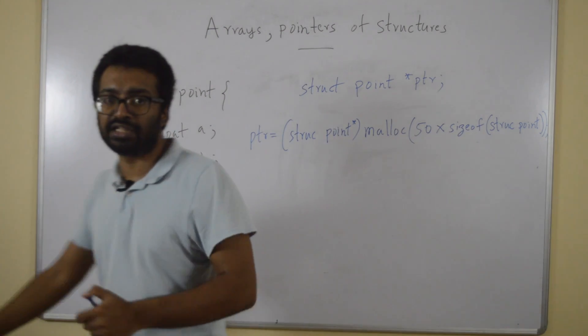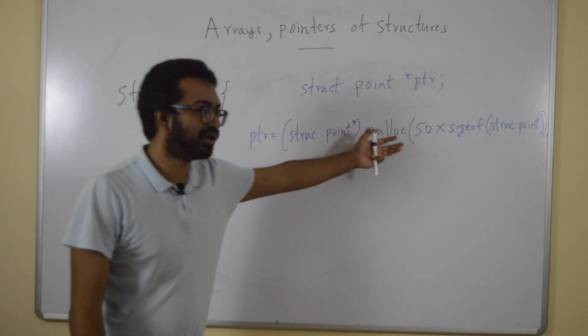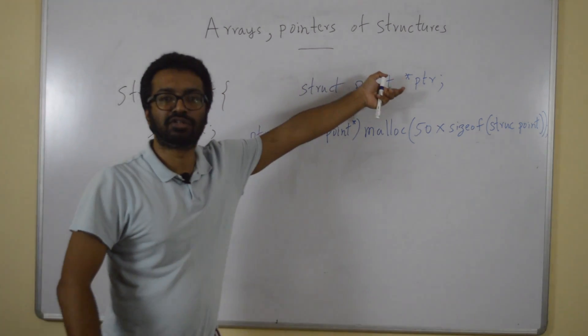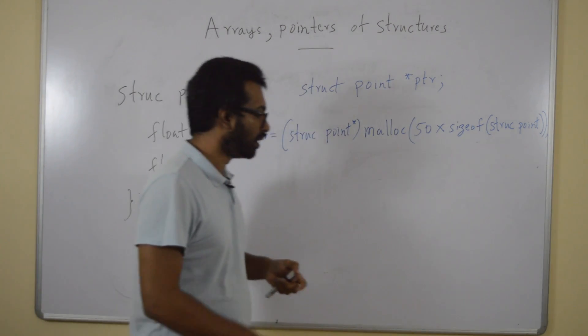I type cast it using the type struct point star. So I change from void pointer void star to this type and then that's assigned to ptr. Because ptr is of the same type, we can do it.